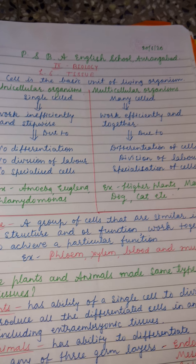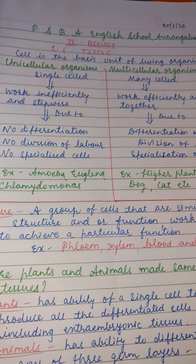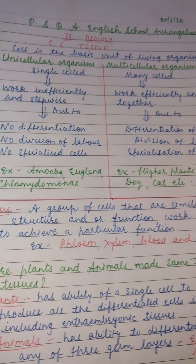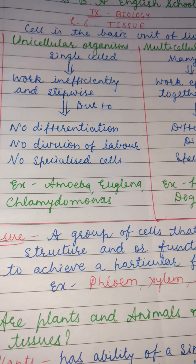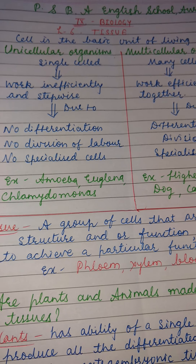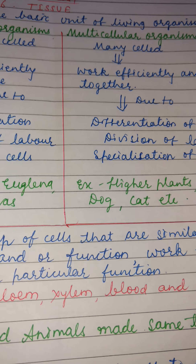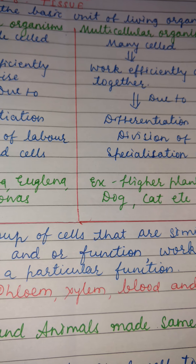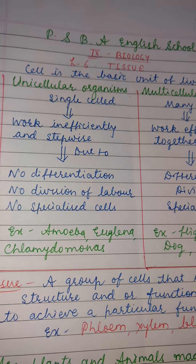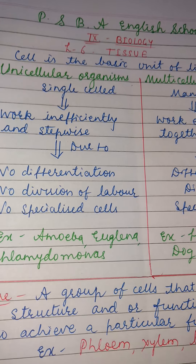There are two types of organisms based on cellular structure: unicellular organisms and multicellular organisms. In unicellular organisms, there is the presence of a single cell which performs all basic functions. They work inefficiently and stepwise. In unicellular organisms, since there is only a single cell, there is no differentiation, no division of labor, and no specialized cells.